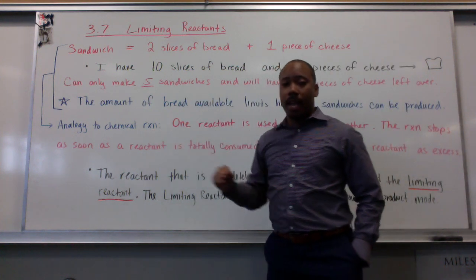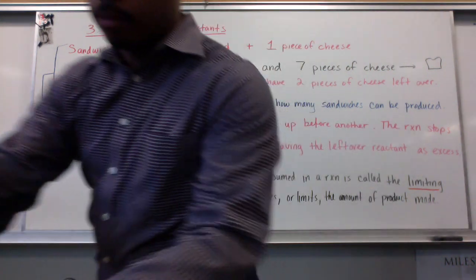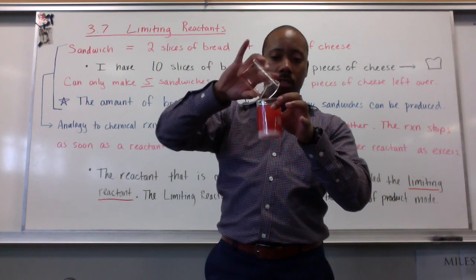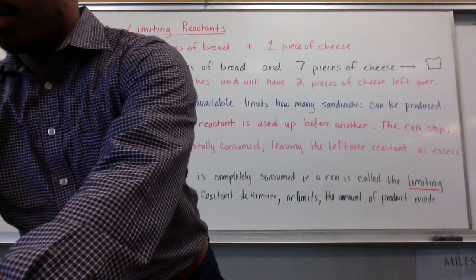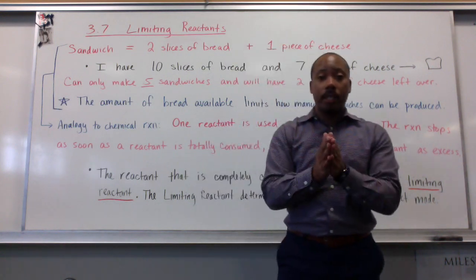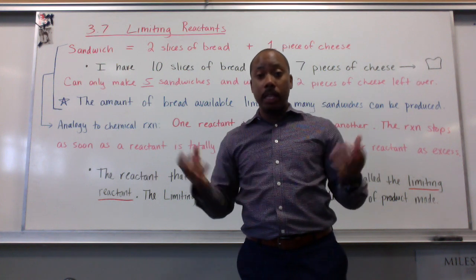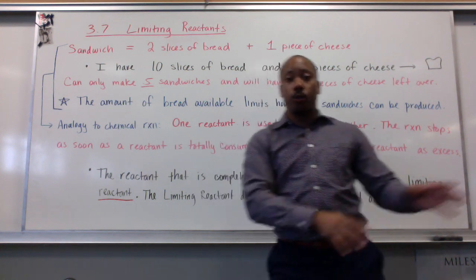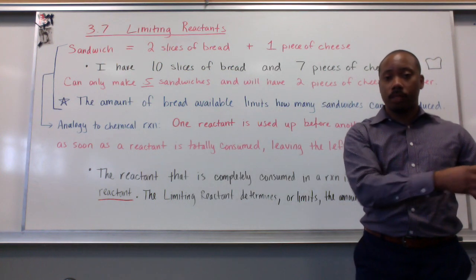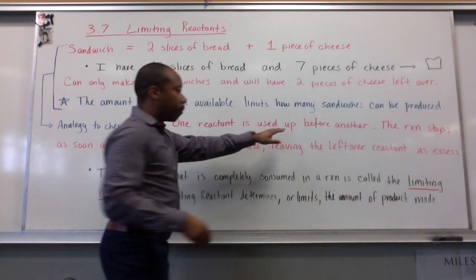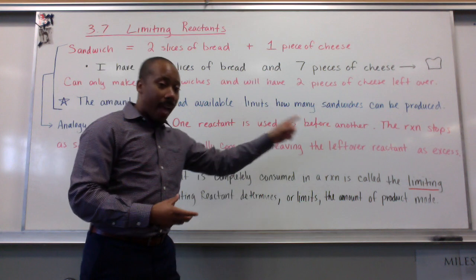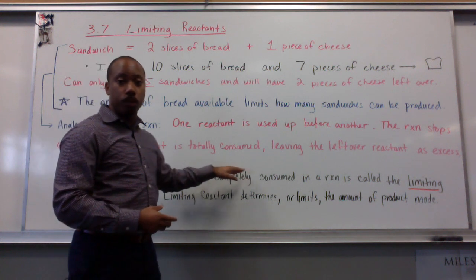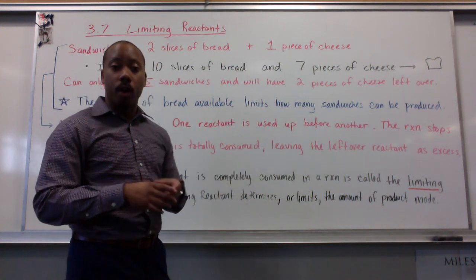This is analogous to how chemical reactions work. We usually have two reactants. They react together in some way. At the atomic level, one reactant is going to run out or be completely consumed before the other one has had a chance to be consumed. Because those reactants are reacting together to form your product. So one reactant is used up before another. Once this happens, the reaction stops. It stops as soon as that reactant is completely consumed, leaving the leftover reactant as what we call excess.